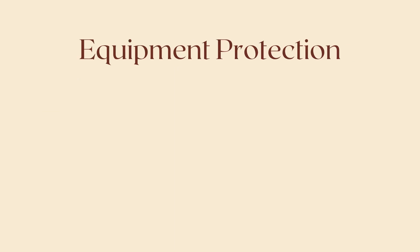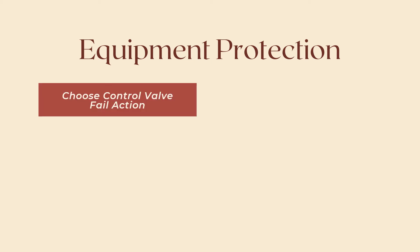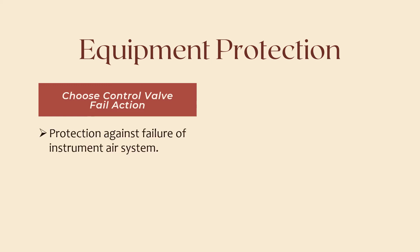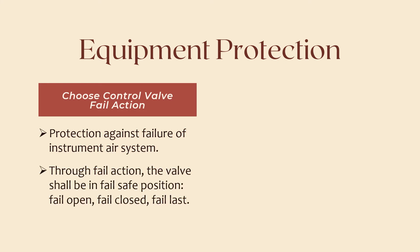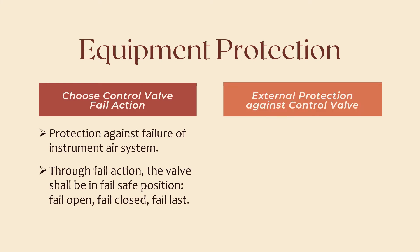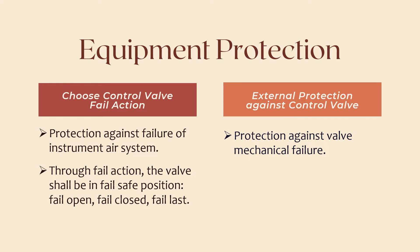So if we want to ensure that the plant shall not have any safety issue if the control valve failed, we should first make sure that instrument air failure won't create a safety issue due to accidental opening or closing of a control valve. We should choose the correct valve fail action, whether it can be fail open, fail closed, or fail in last position. But still there is a probability that the control valve stem is mechanically stuck in a position where it can cause a safety issue, which is why we would need external protection against valve mechanical failure.